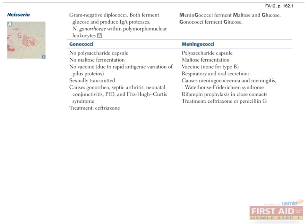When it comes to gram-negative bacteria, there are only two important cocci species you need to know: N. gonorrhoeae and N. meningitidis. Both ferment glucose and appear as diplococci — pairs of cocci — but N. meningitidis can be distinguished from N. gonorrhoeae by two features. N. meningitidis is a maltose fermenter — remember the M's — while Neisseria gonorrhoeae is not. Neisseria meningitidis also has a polysaccharide capsule that inhibits phagocytosis.